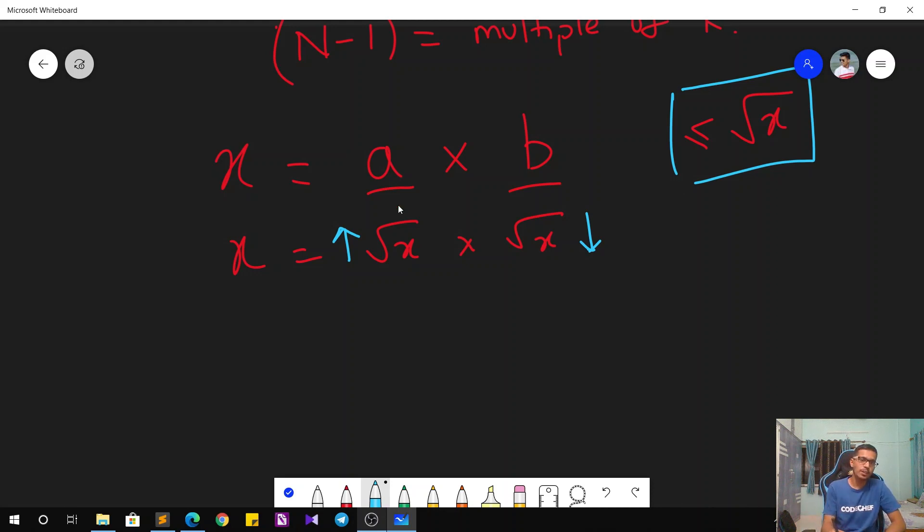What we'll basically do is call our number N minus 1 as X. Now we need to find the divisors of X—how many divisors of X exist. We won't check all possible numbers from 1 to X. Rather, we will just check the numbers from 1 to square root of X.